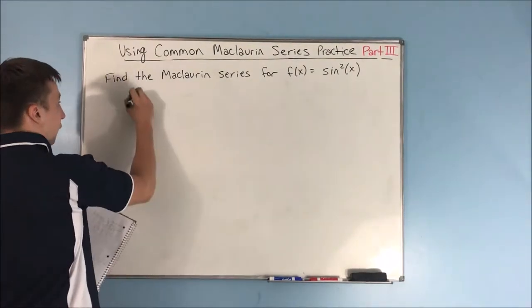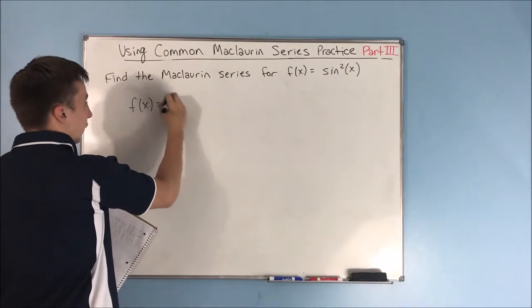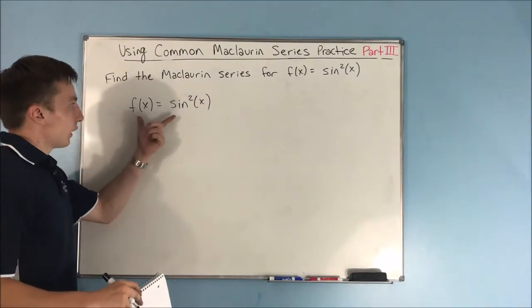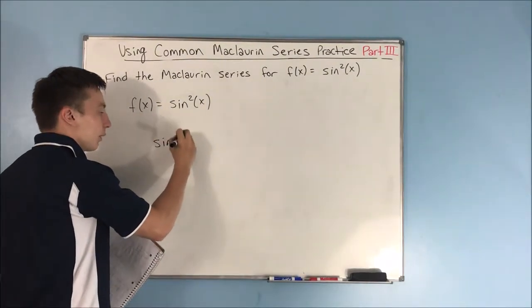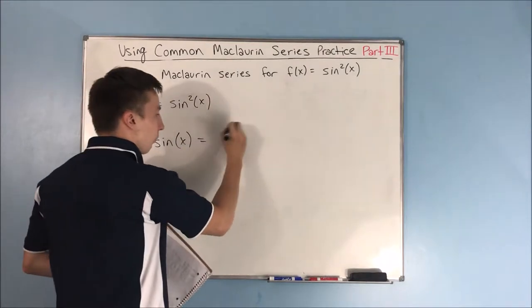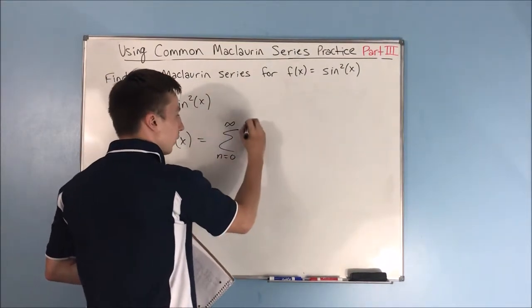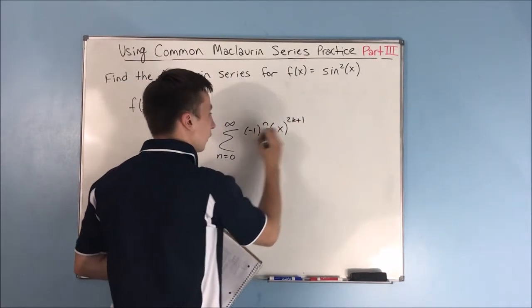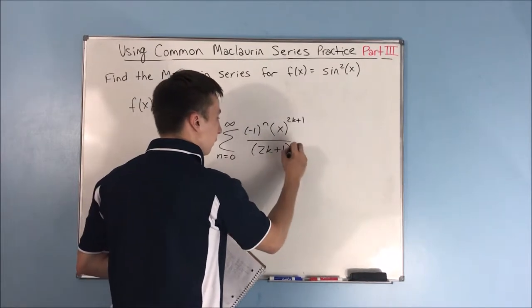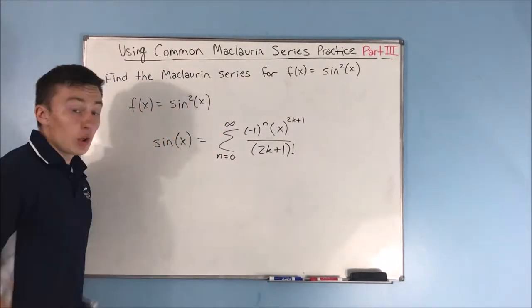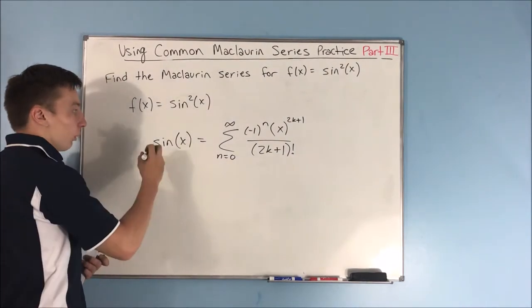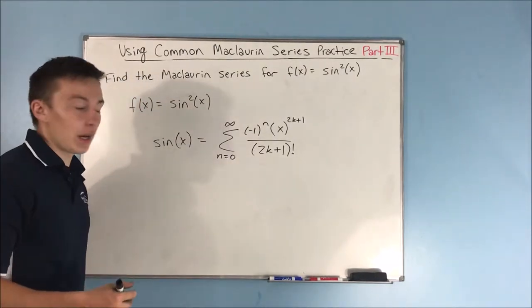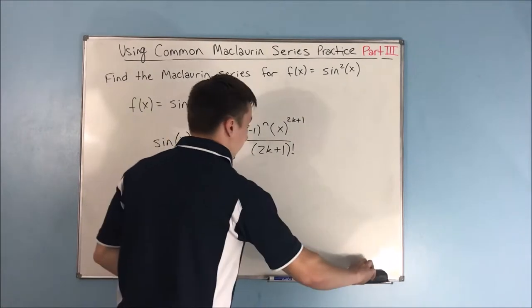We're starting out with f of x equal to sine squared x. What we're not going to be able to do is just use sine of x — that's the sum from n equals 0 to infinity of negative 1 to the n times x to the 2k plus 1 over 2k plus 1 factorial. We can't use this because how would you go about squaring both sides? You're not going to be able to, so we can't use sine of x here.